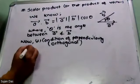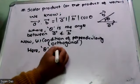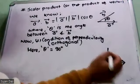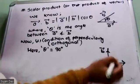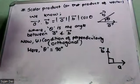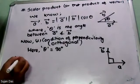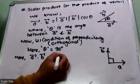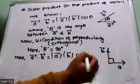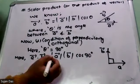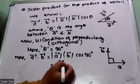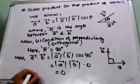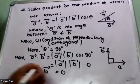The perpendicular condition: here theta equals 90 degrees. So vector A and vector B are perpendicular to each other. In this case, vector A dot vector B equals the magnitude of vector A times the magnitude of vector B times cos 90 degrees, and cos 90 degrees is 0. So this becomes 0.